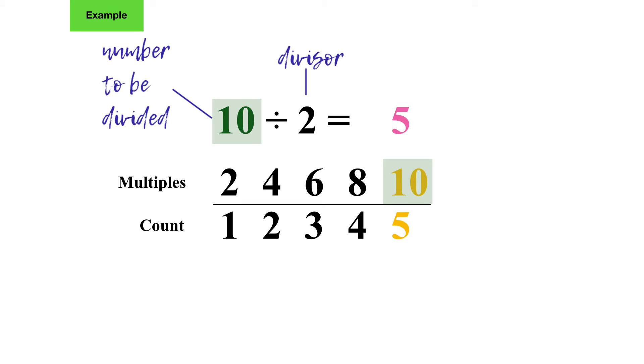You can count up on your hand as well. Each time you count, raise a finger: 2, 4, 6, 8, 10. You're going to see that you get to 5.